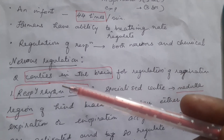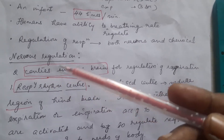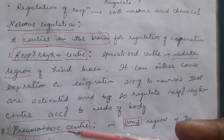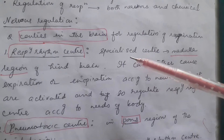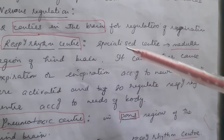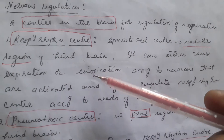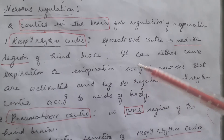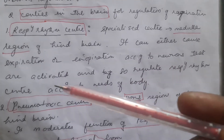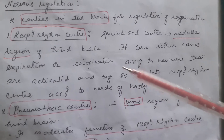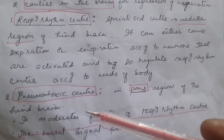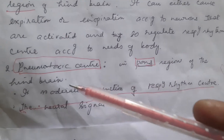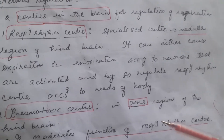For nervous regulation, there are two centers in the brain for regulation of respiration: the respiratory rhythm center and the pneumotaxic center. The respiratory rhythm center is a specialized center located in the medulla region of the hindbrain. It can cause either expiration or inspiration according to our needs when the neurons are activated, regulating respiratory rhythm according to the needs of the body. The pneumotaxic center is located in the pons region of the hindbrain and it moderates the function of the respiratory rhythm center.